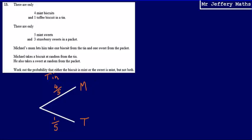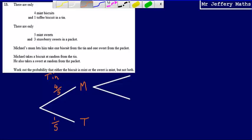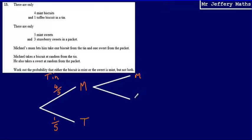Following that, Michael then selects a sweet from the packet. If he selects a mint biscuit from the tin first, there are two things that could potentially happen: he could then select a mint sweet or a strawberry sweet. The probability of choosing a mint sweet is five over eight, and the probability of choosing a strawberry sweet is three over eight.